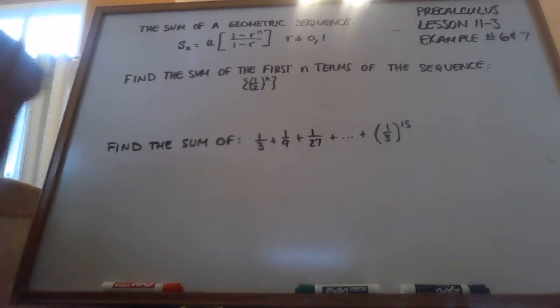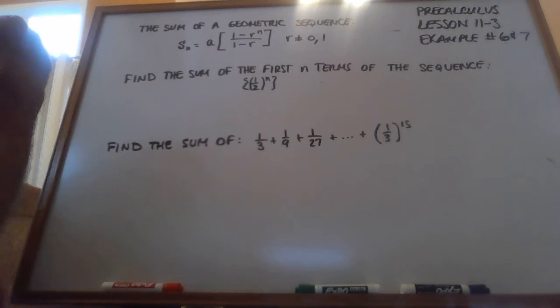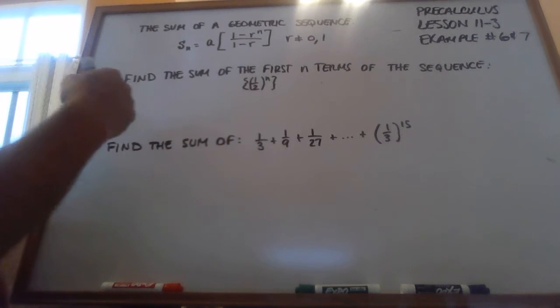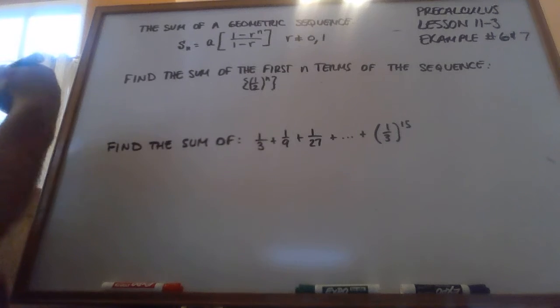So two types of problems. Find the sum of the first n terms of the sequence, 1 half to the n. So this one, we're not going to get an answer like 2. We're going to get a formula because it's n terms. We don't know how many terms it is.